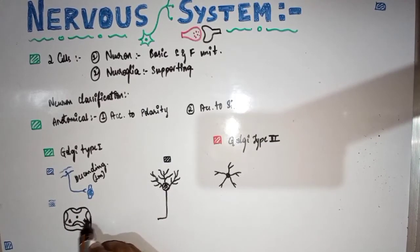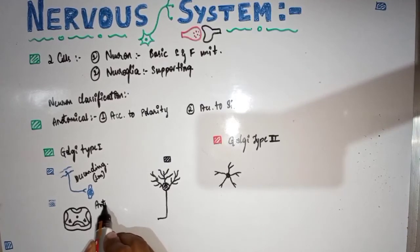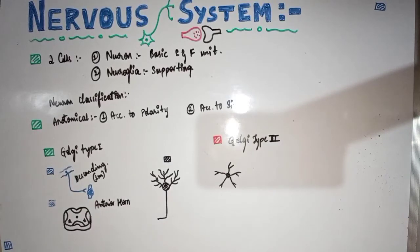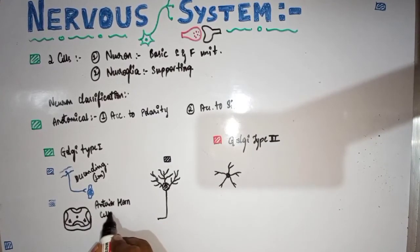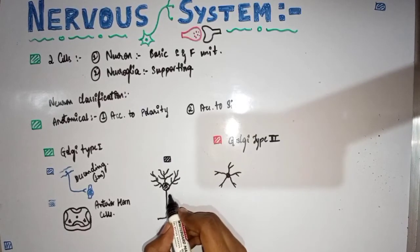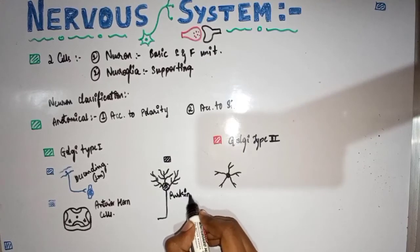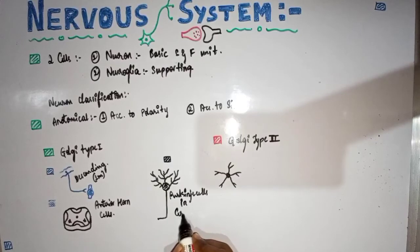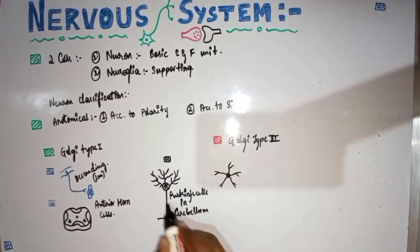Another example of Golgi type 1 cells are the cells in the anterior horn of the spinal cord. The anterior horn cells belong to the Golgi type 1 type. A second place to find Golgi type 1 cells is Purkinje cells in the cerebellum, which have one long axon with a bushy appearance of dendrites.